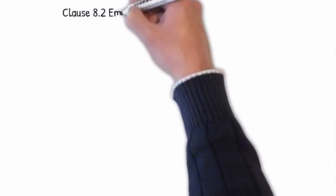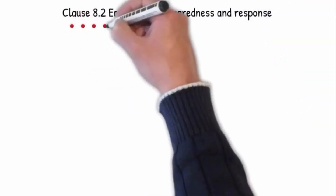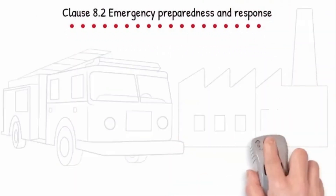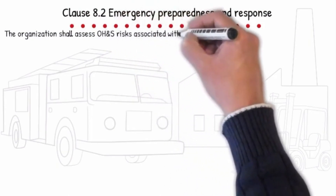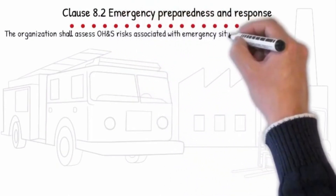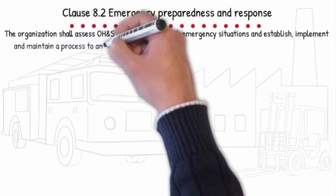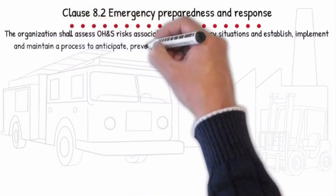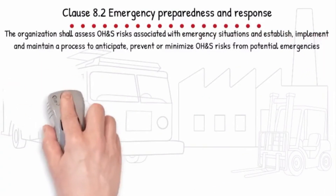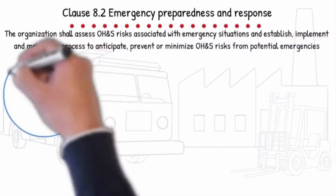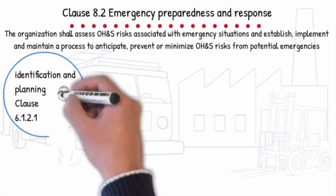Clause 8.2 Emergency Preparedness and Response. The organization shall assess OH&S risks associated with emergency situations and establish, implement and maintain a process to anticipate, prevent or minimize OH&S risks from potential emergencies, including identification and planning, including provision for first aid.